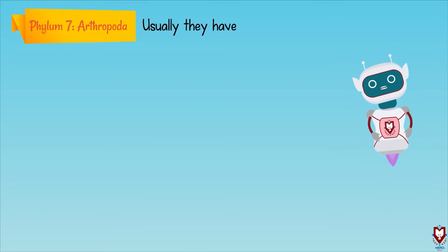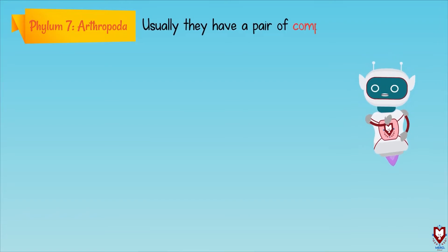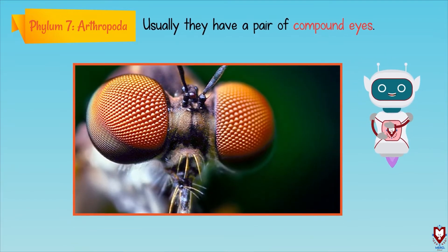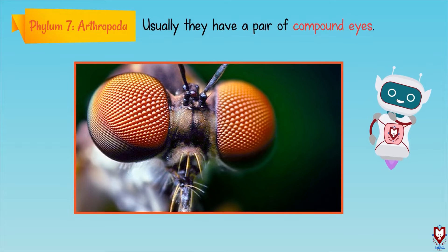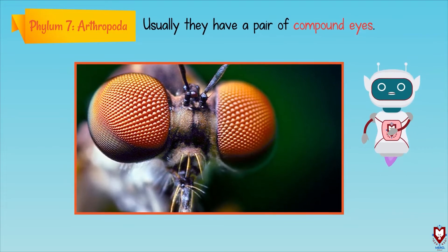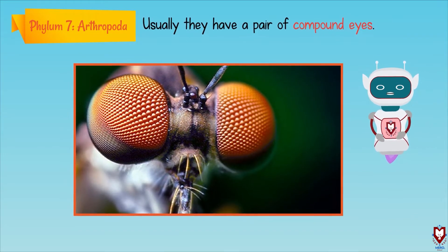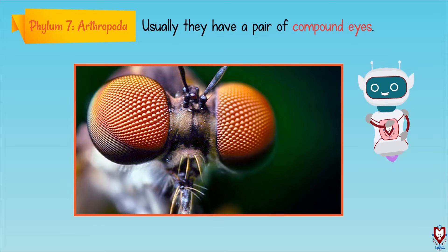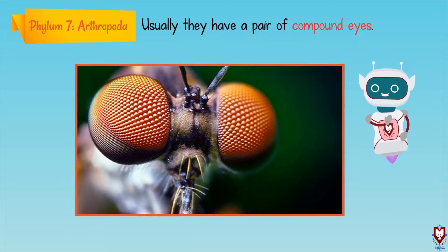Usually they have a pair of compound eyes. Compound eyes consist of many small lenses trapped together, allowing the animal to see in multiple directions.